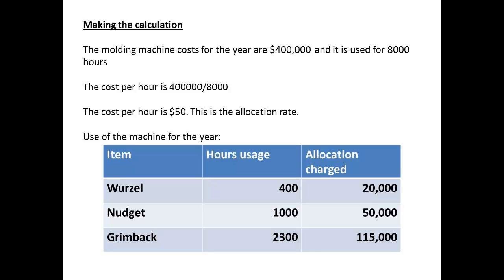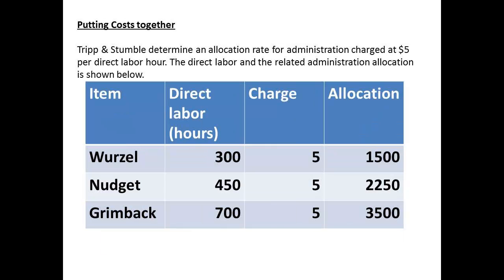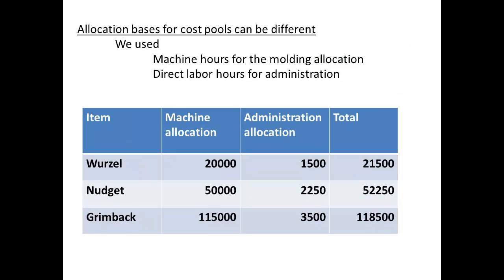Based on machine use, the table shows the costs allocated to each product. Trip and Stumble also determine that there is to be an allocation rate for the administrative costs, and that this is to be based on direct labor hours, at a charge of $5 per direct labor hour. The table shows the cost allocated to each product as a result of this. The allocation base for each cost pool can be different. In this example, we used machine hours for one cost pool, and direct labor hours for the other cost pool. The combined effect of these two charges on each product cost is shown in the table.